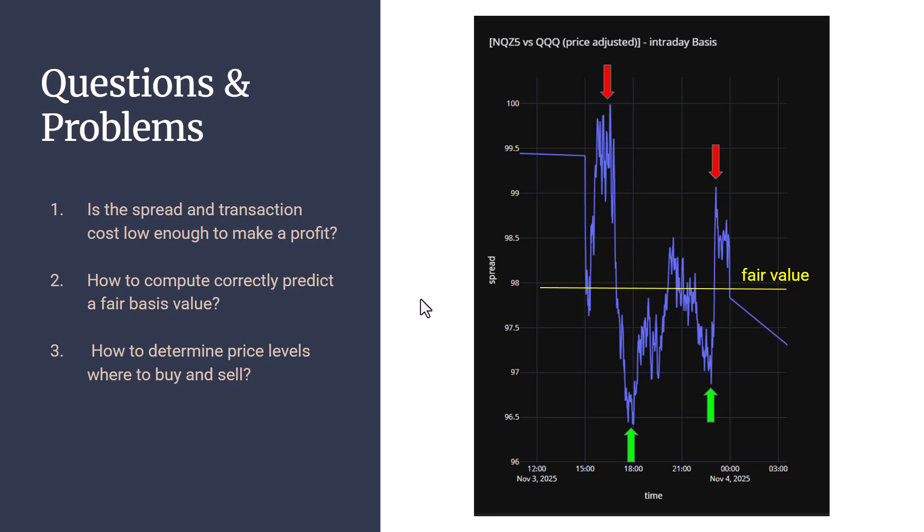The second question is, how do we compute the fair value correctly? How do we determine that basis is overpriced or whether it's underpriced? And then three, how do you determine the price levels? How do we know that this is the high point and this is the low point? Because of course, as in any market, we can't predict what price might do. These are the three main questions that we have to ask ourselves to actually make this work.